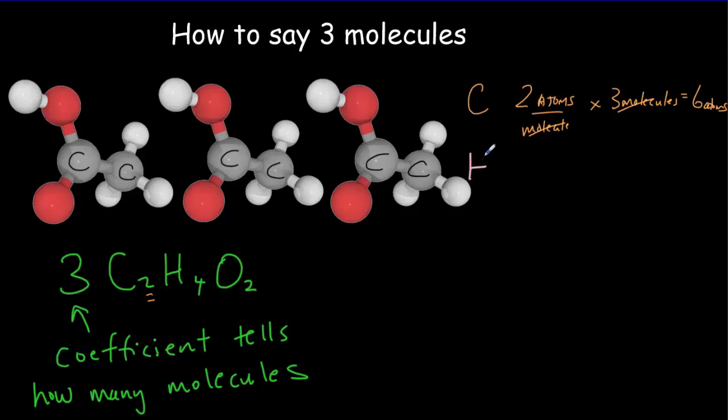And then similarly for the hydrogen, we would have four hydrogen atoms per molecule, times three molecules, giving us 12 atoms of hydrogen. And similarly for the oxygen, there's two atoms per molecule, times three molecules, giving us a grand total of six atoms of oxygen in three molecules of acetic acid.